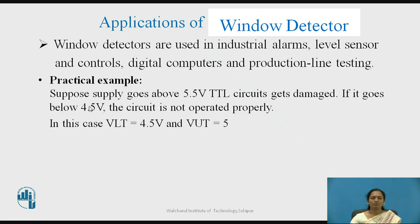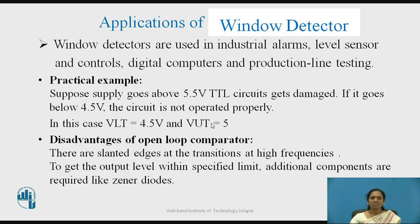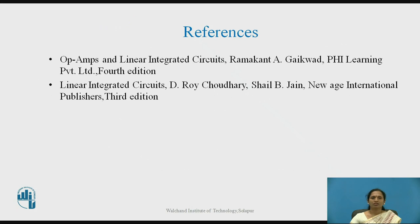As a practical example, suppose a circuit cannot work when input is greater than 5.5 or less than 4.5. We can use this window detector to get the proper operation of the circuit. A disadvantage is that there are some slanted edges of the transitions at high frequencies. Therefore, to obtain precise operation, we can use additional components like zener diodes.